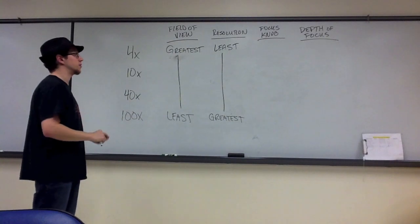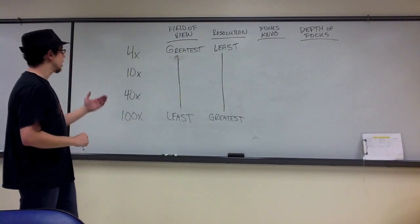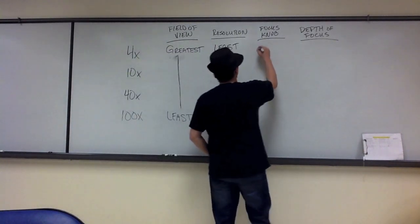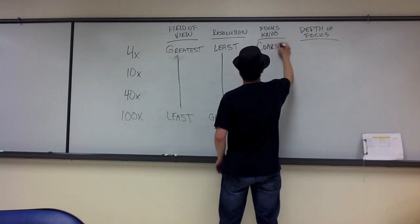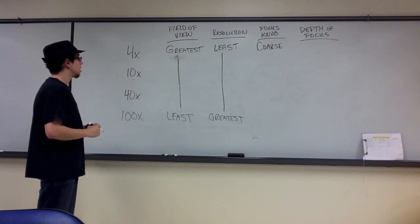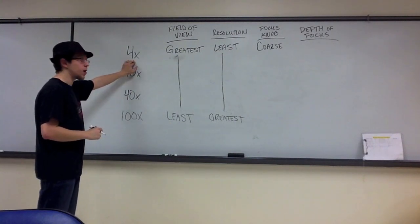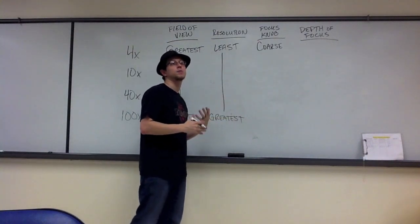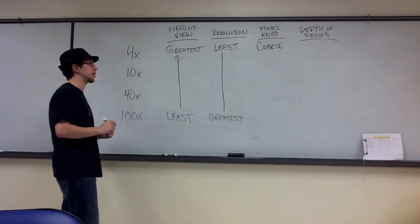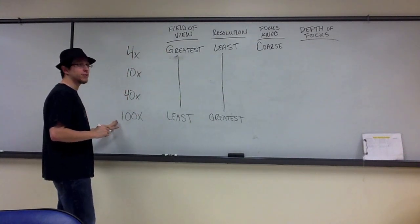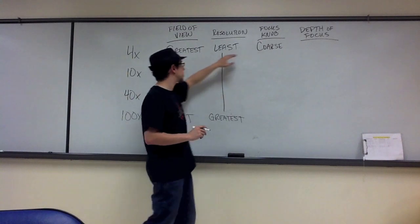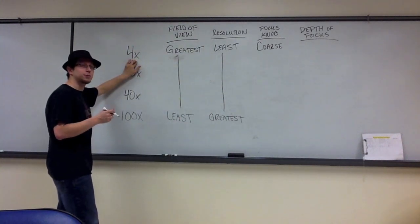Which brings us to the focus knob that we're going to use with each. 4x should always be used in conjunction with the coarse focus knob. Whenever you place a sample on the microscope, you should always start by placing your objective lens at 4x and using the coarse focus adjustment knob to bring your sample into focus. Always start with 4x and coarse. I can't stress that enough.